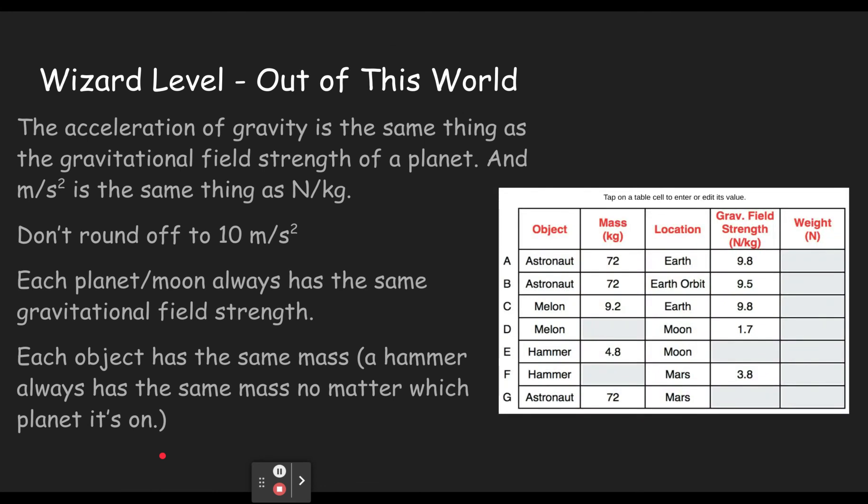The wizard level. So first of all, we see acceleration of gravity is the same thing as the gravitational field strength on a planet. So this column right here is lowercase g. You can see that because we're not always doing Earth, the values here are not always 9.8. So I would recommend going ahead and using 9.8. I think you get a better sense of the changes if you use 9.8. Since you have to get used to using different numbers anyways, I just say don't round off to 10. And by the way, this newtons per kilogram is the same thing as meters per second squared.